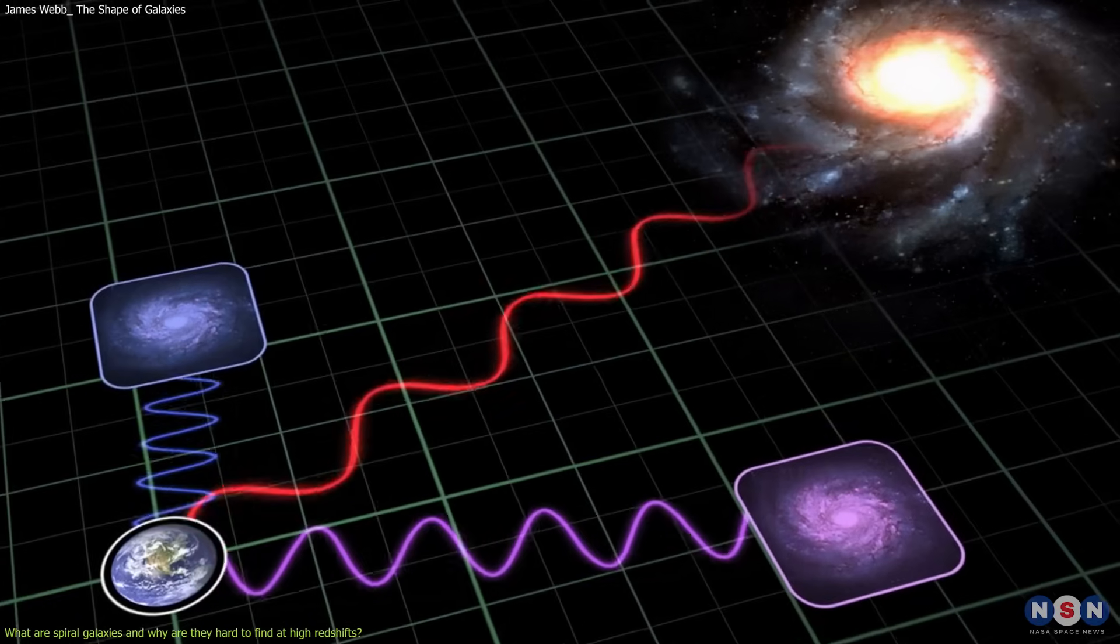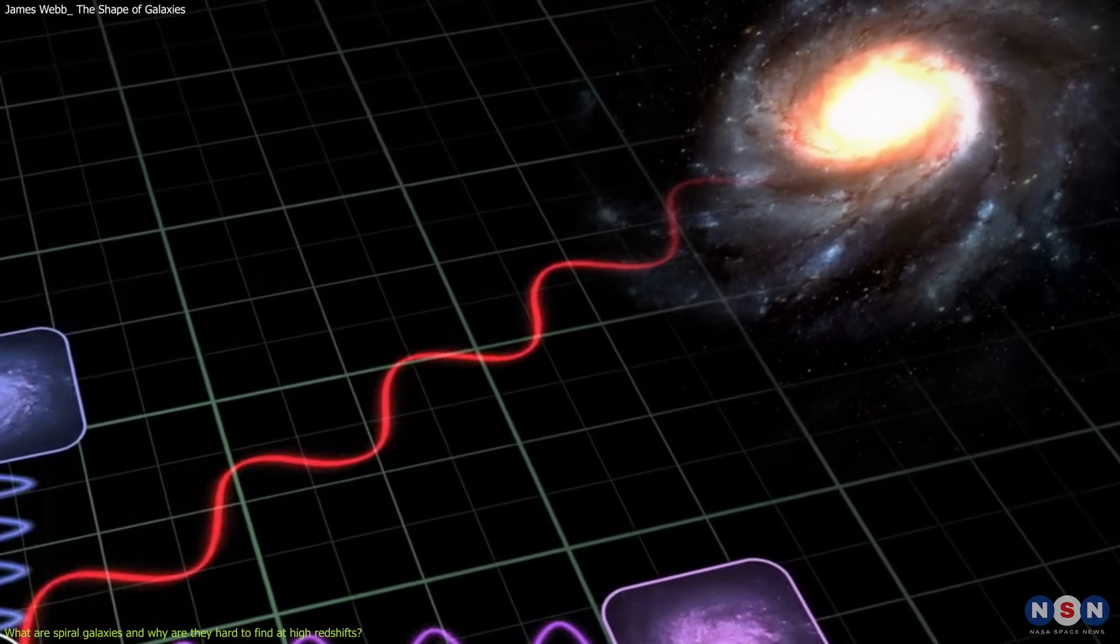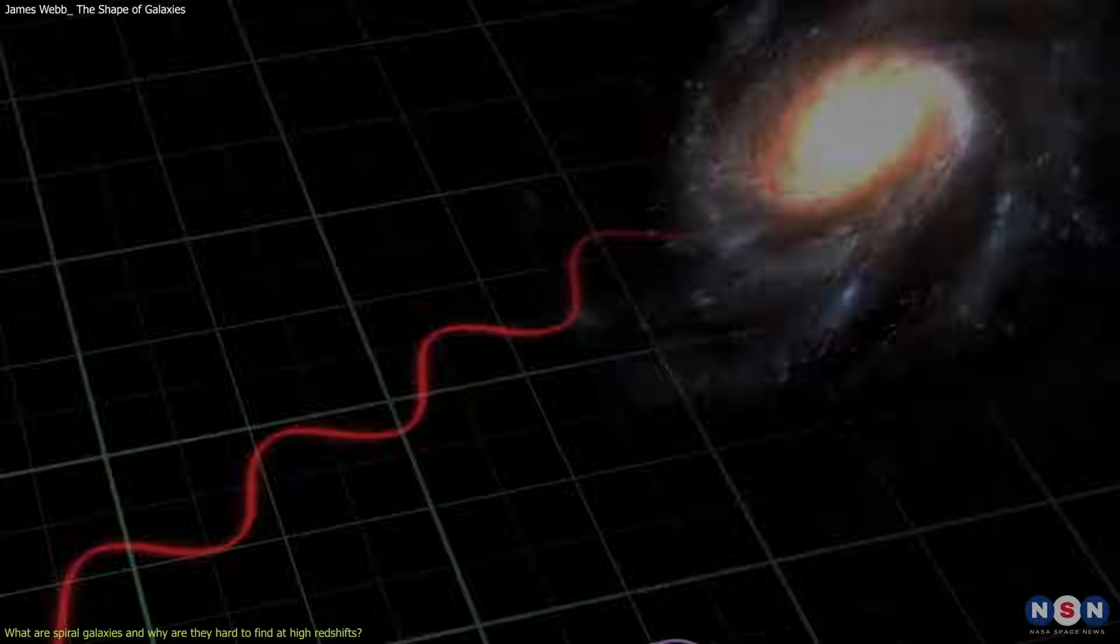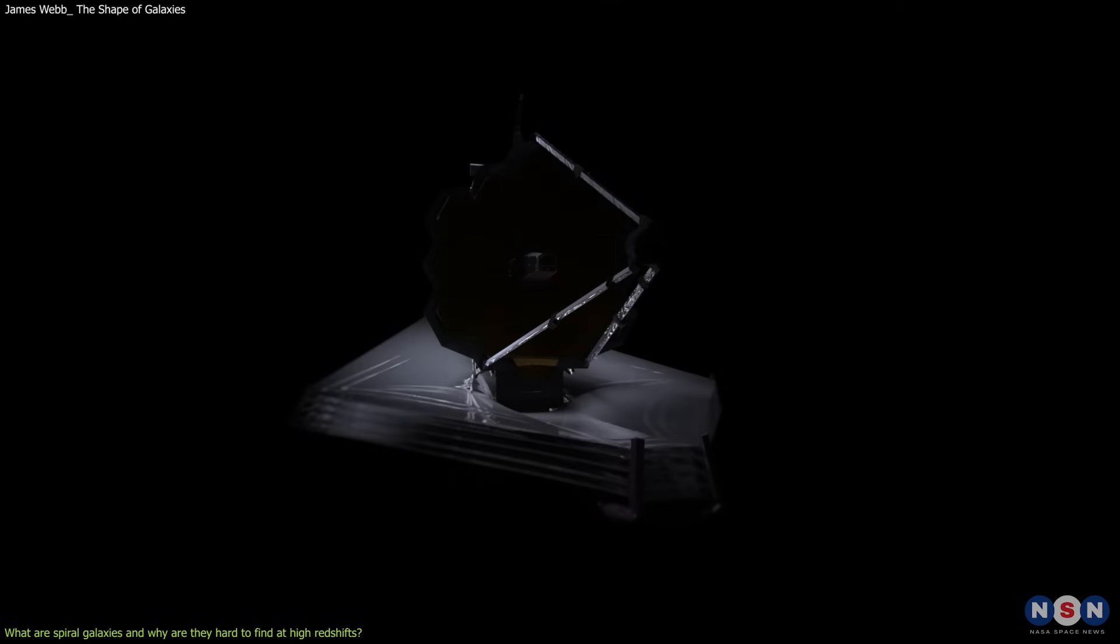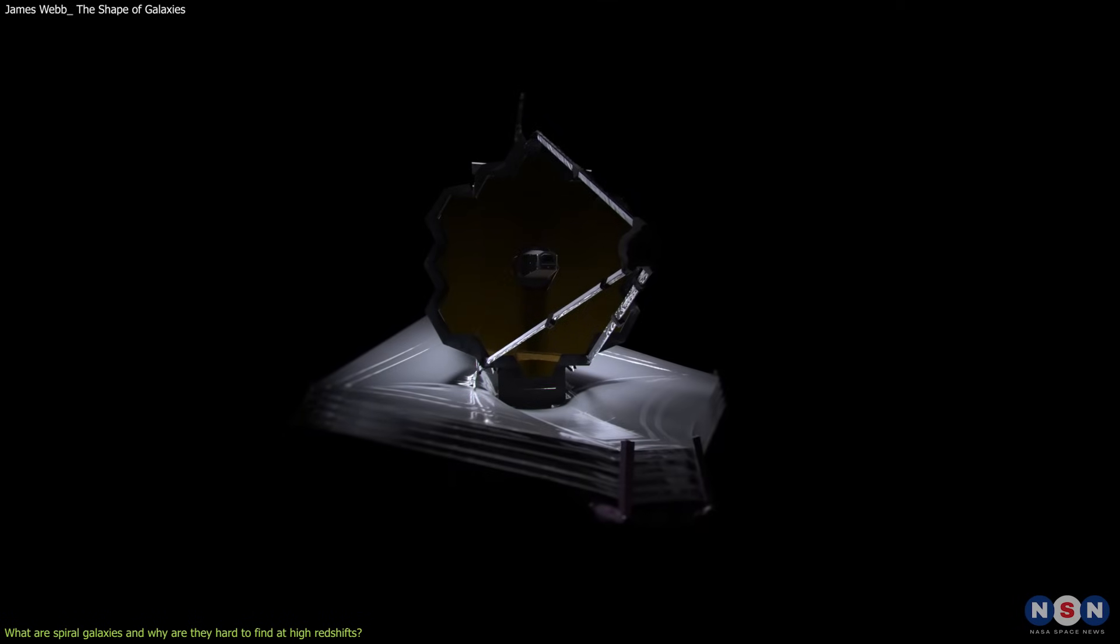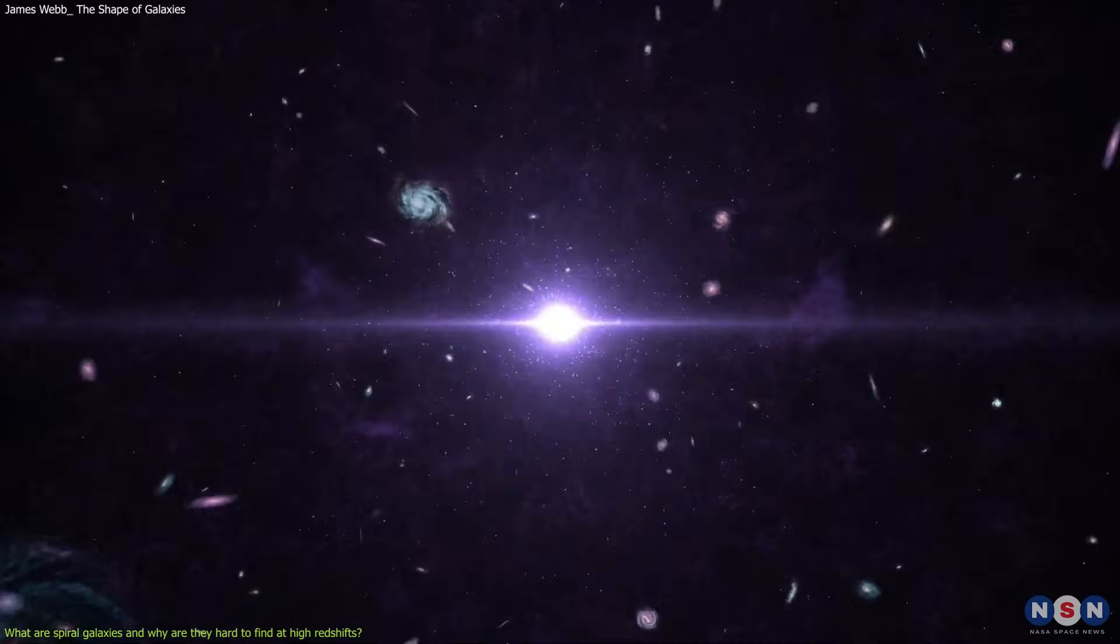But finding and identifying spiral galaxies at high redshifts is a very challenging task. But luckily, we have a powerful tool that can help us overcome these challenges and reveal the secrets of the early universe.